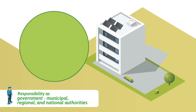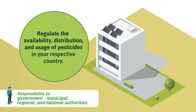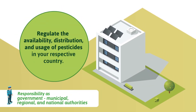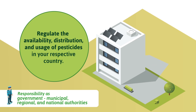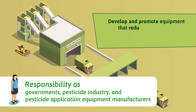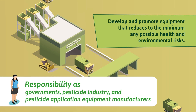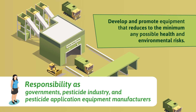If you are an authority, your responsibility is to regulate the availability, distribution, and usage of pesticides in your area or country. Developing and promoting application equipment that reduces to the minimum any possible health and environmental risks is the responsibility of governments, the pesticide industry, and pesticide application equipment manufacturers.